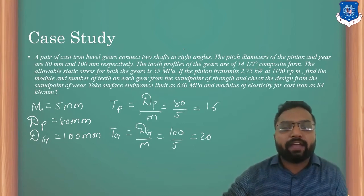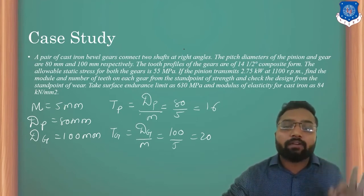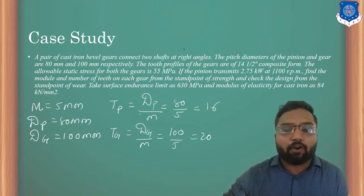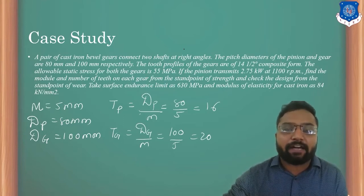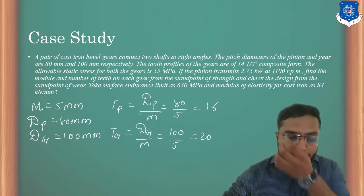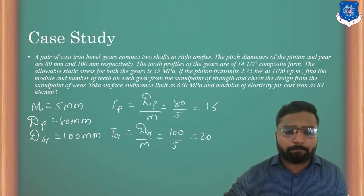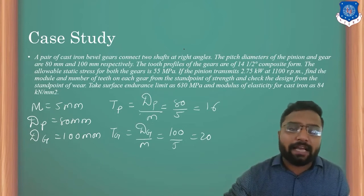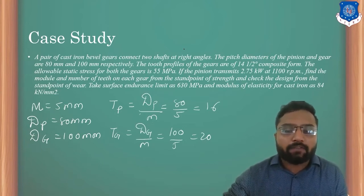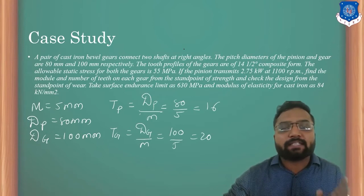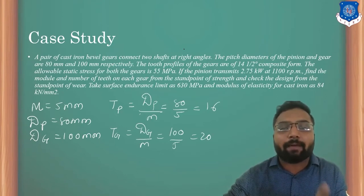In the last lecture, we found out our value of module depending on our thrust load. How did we find out the thrust load? Thrust load depended on the same material where it has allowable stress which is 55 MPa. The thrust load formula is: Wt = sigma × Cv × π × B × M × Y' × (L minus B) / L.